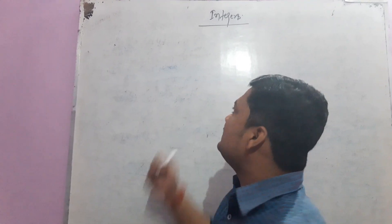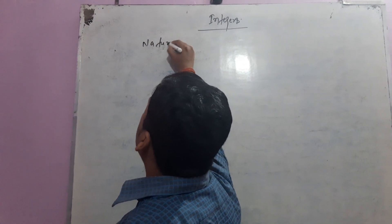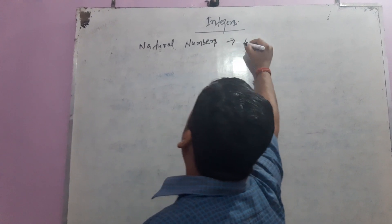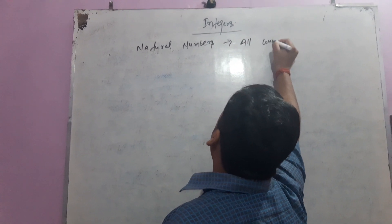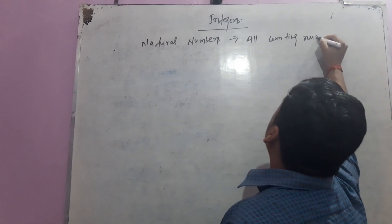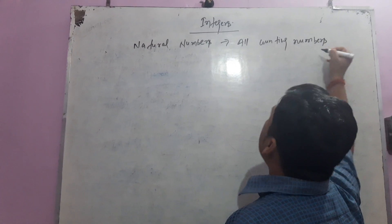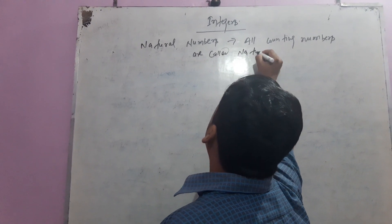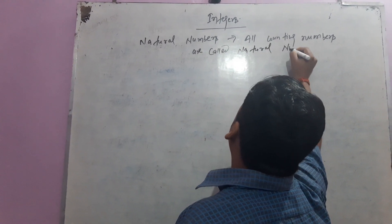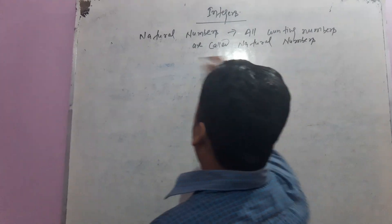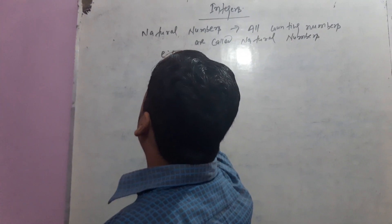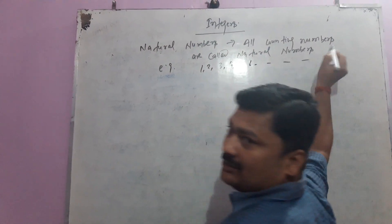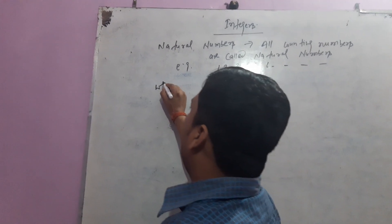Natural numbers means all counting numbers. All counting numbers are called natural numbers. For example: 1, 2, 3, 4, 5, 6, and so on.